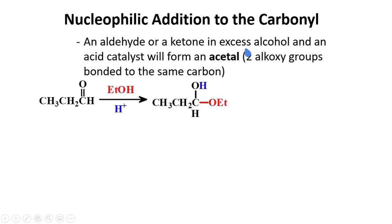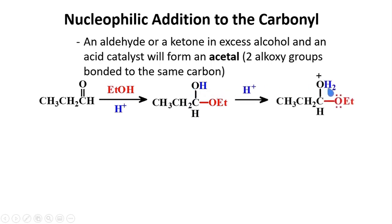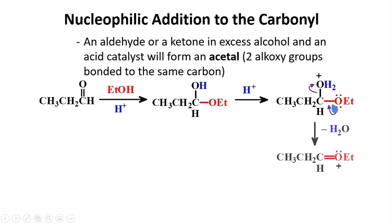An aldehyde or a ketone in excess alcohol and an acid catalyst will form an acetal. So if you have your aldehyde and you add ethanol in the presence of an acid, you will readily form a hemiacetal. The presence of an acid can protonate this hydroxy group. This protonation will give you OH2, which is a good leaving group. So lone pairs on oxygen in the ethoxy group can form a double bond, which will cleave the bond to OH2, releasing a water molecule. You will get an oxonium ion.